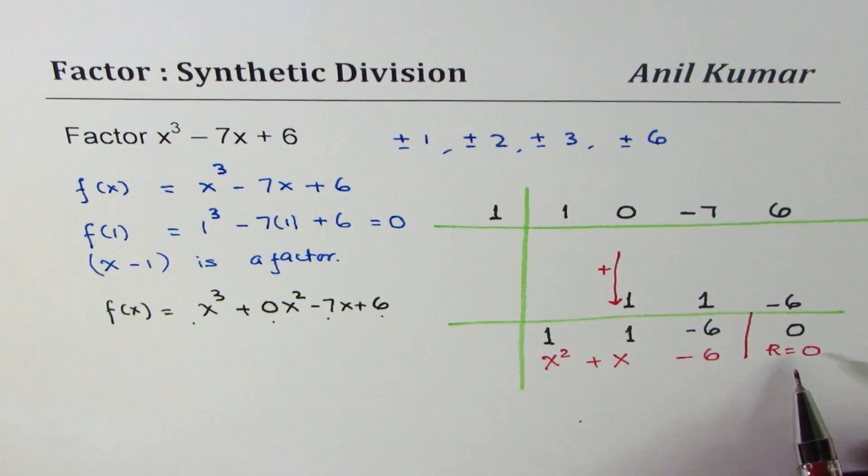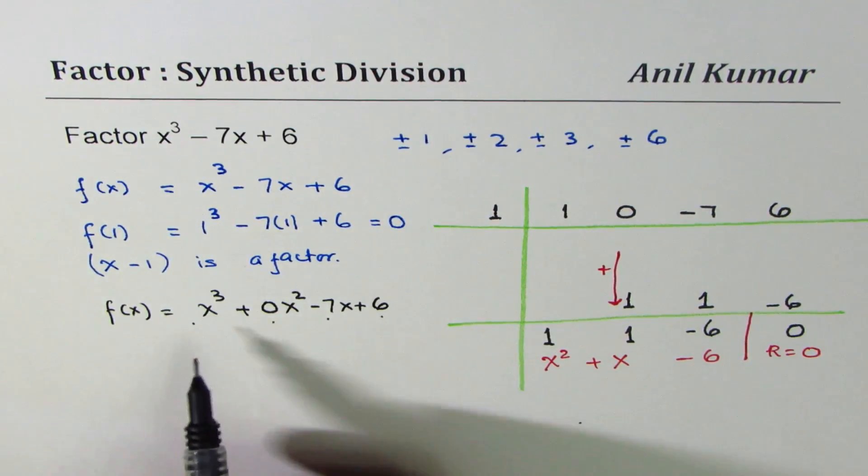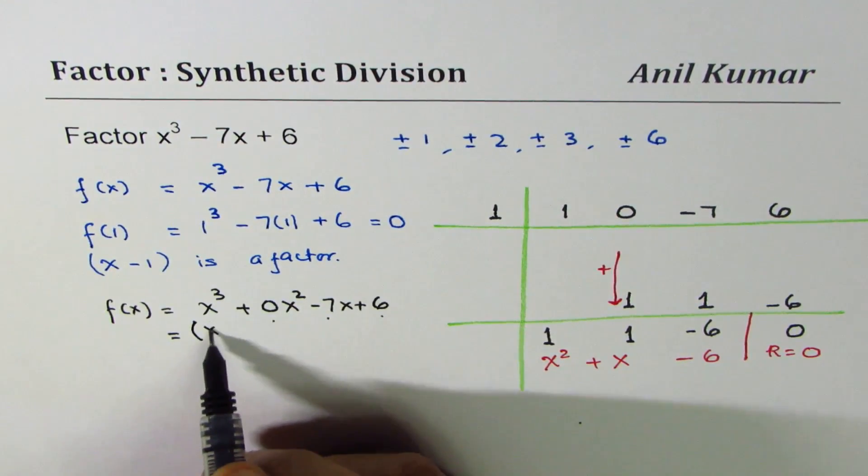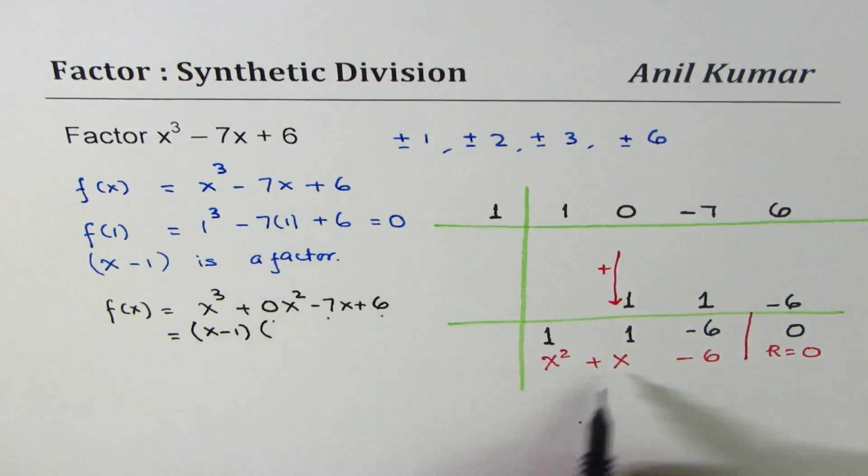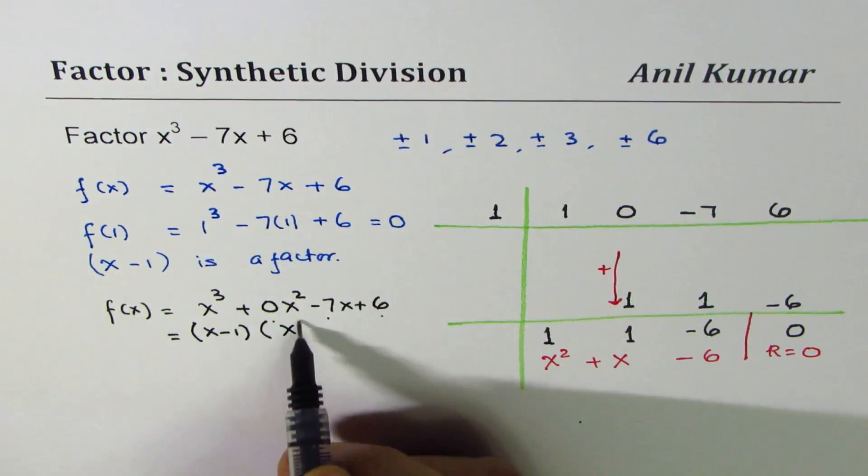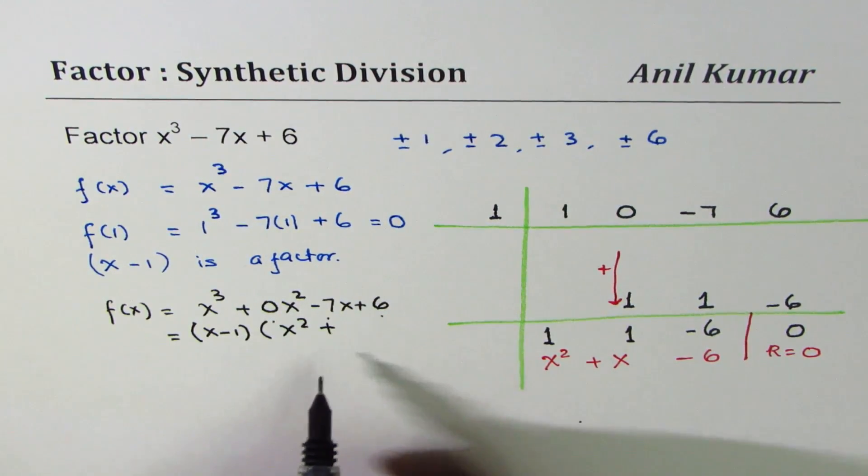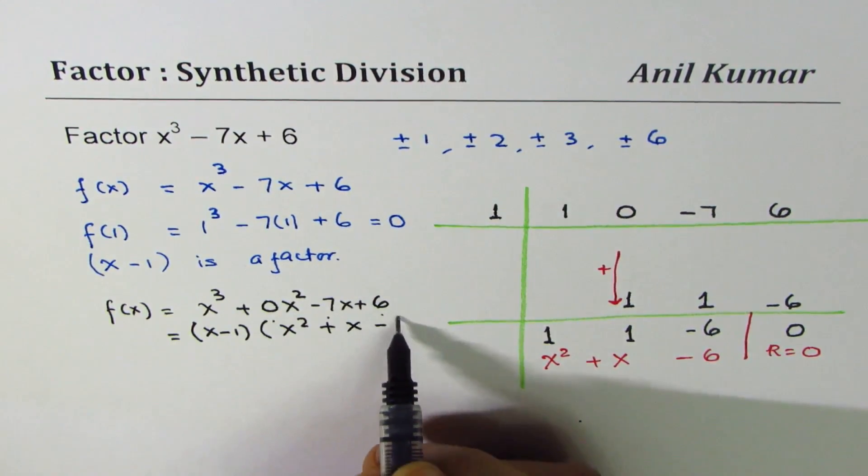As expected, the remainder is indeed 0. Now we get a quadratic equation, which can be factored. So let me write the function as equal to, we divided this by x - 1. So (x - 1) is a factor times x² + x - 6.